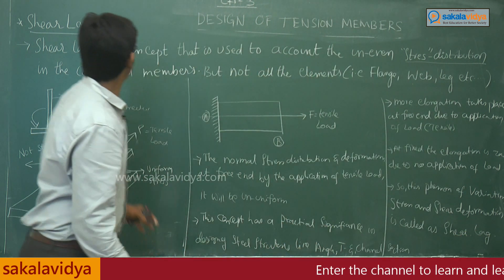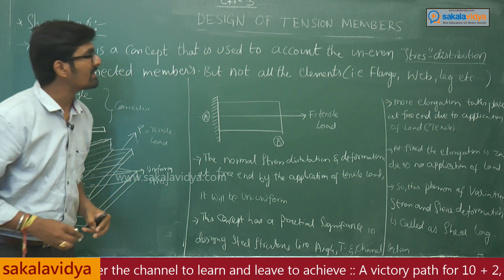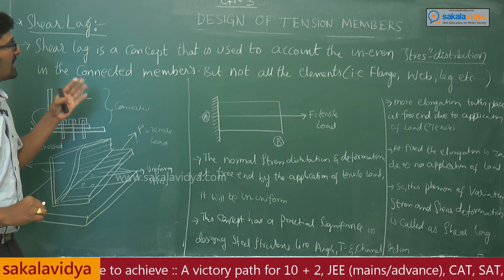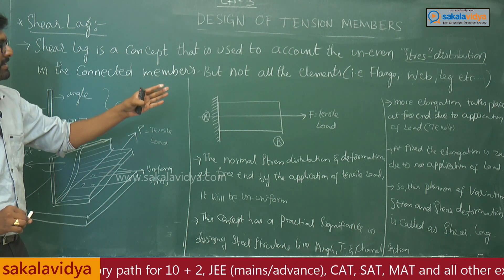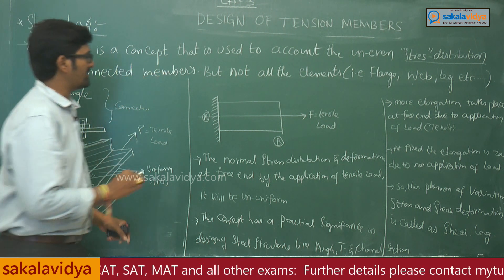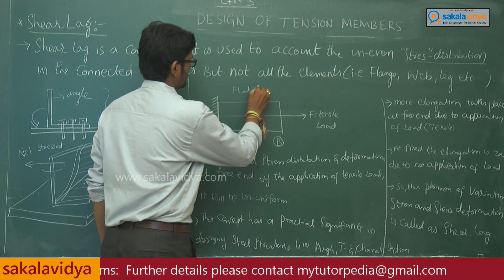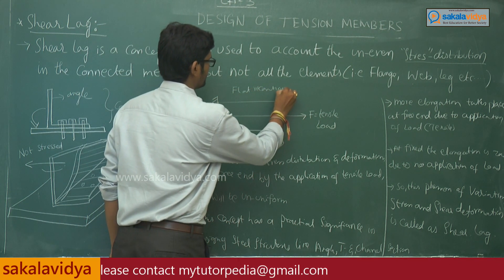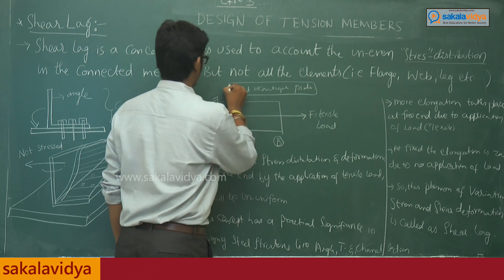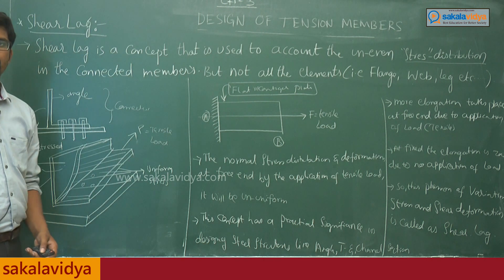Shear lag is a concept used to account for the uneven stress distribution in connected members, but not all elements such as flange, web, or leg. For this we considered a flat rectangular plate. Is it clear?